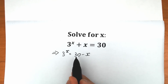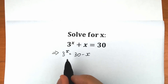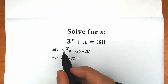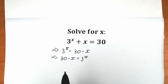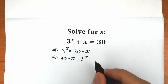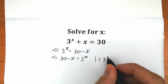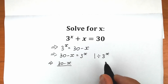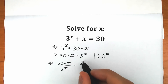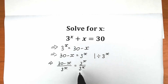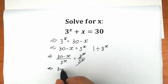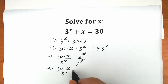Let's change position — bring the right side to the left and the left to the right; it changes nothing because we have an equal sign. So we have 30 minus x equal to 3 to the power x. Now let's divide both sides by 3 to the power x. So 3^x over 3^x cancels to 1, giving us: 30 minus x over 3 to the power x equals 1.